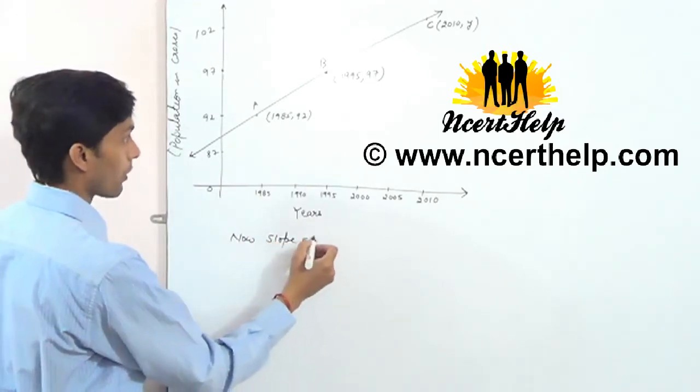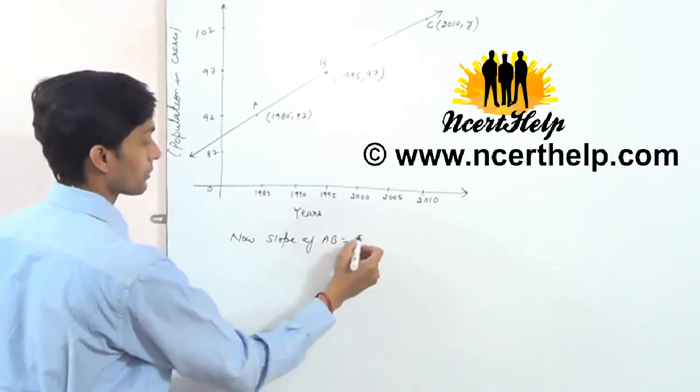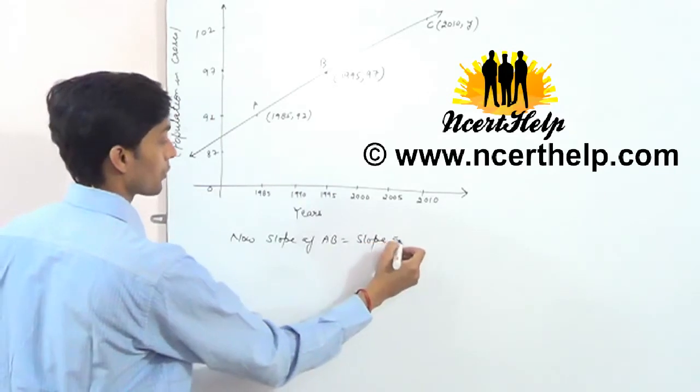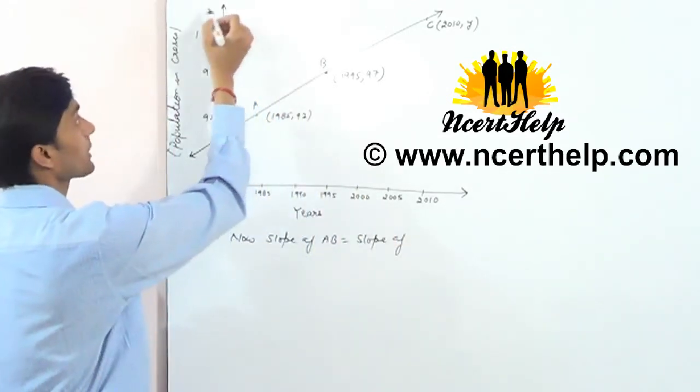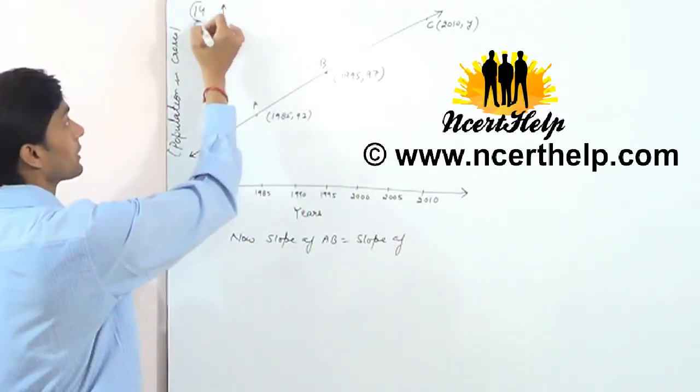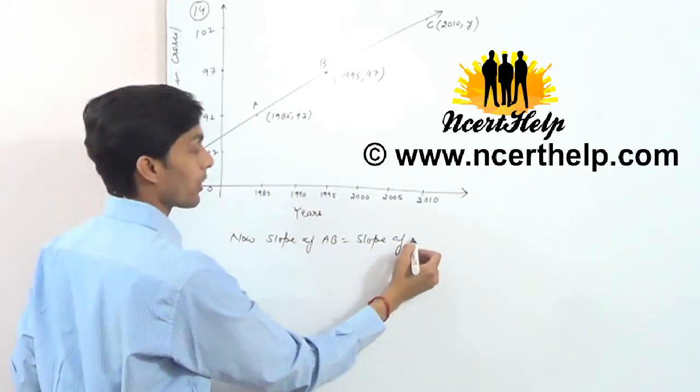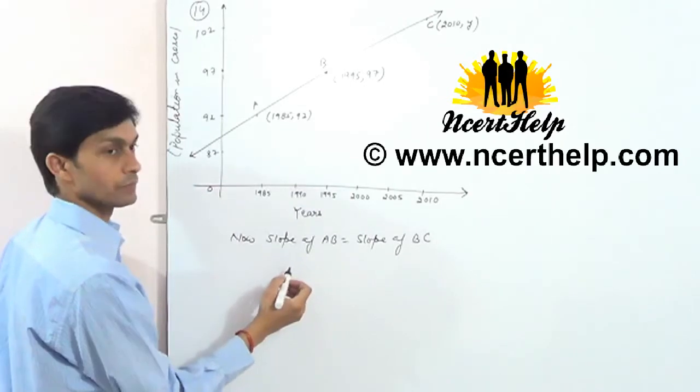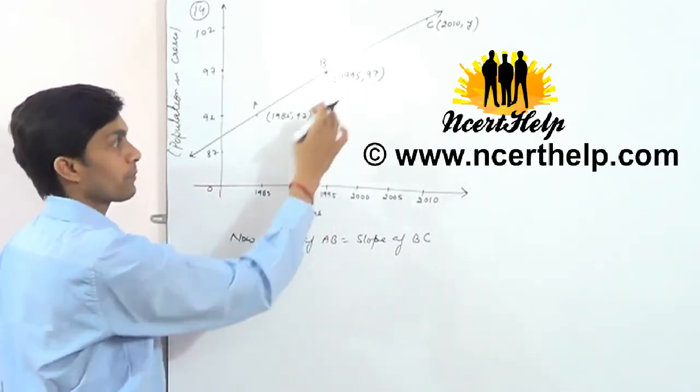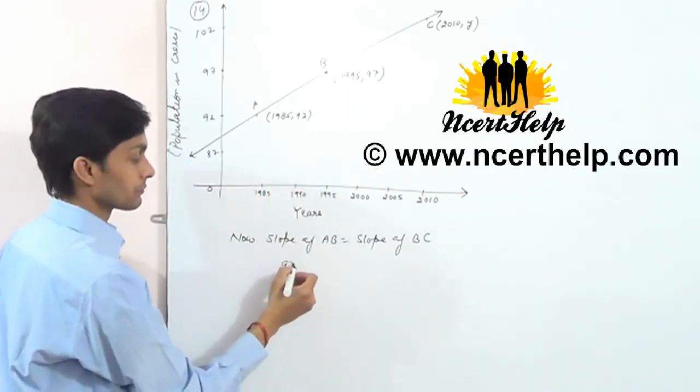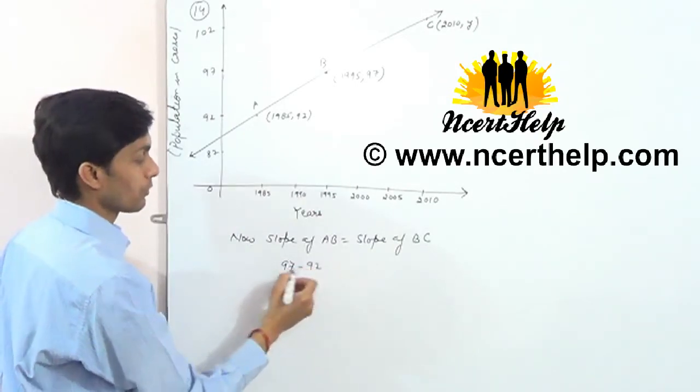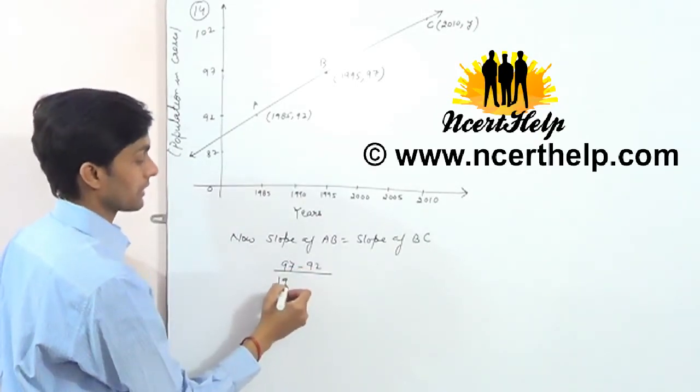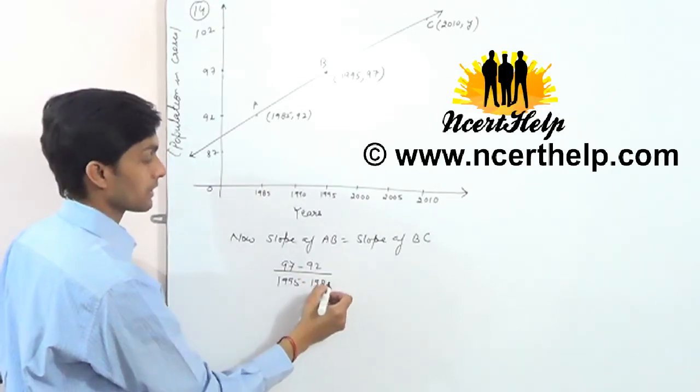Now, slope of AB is equal to slope of BC. Slope of AB? Y2 minus Y1, 92, 1995 minus 1985.